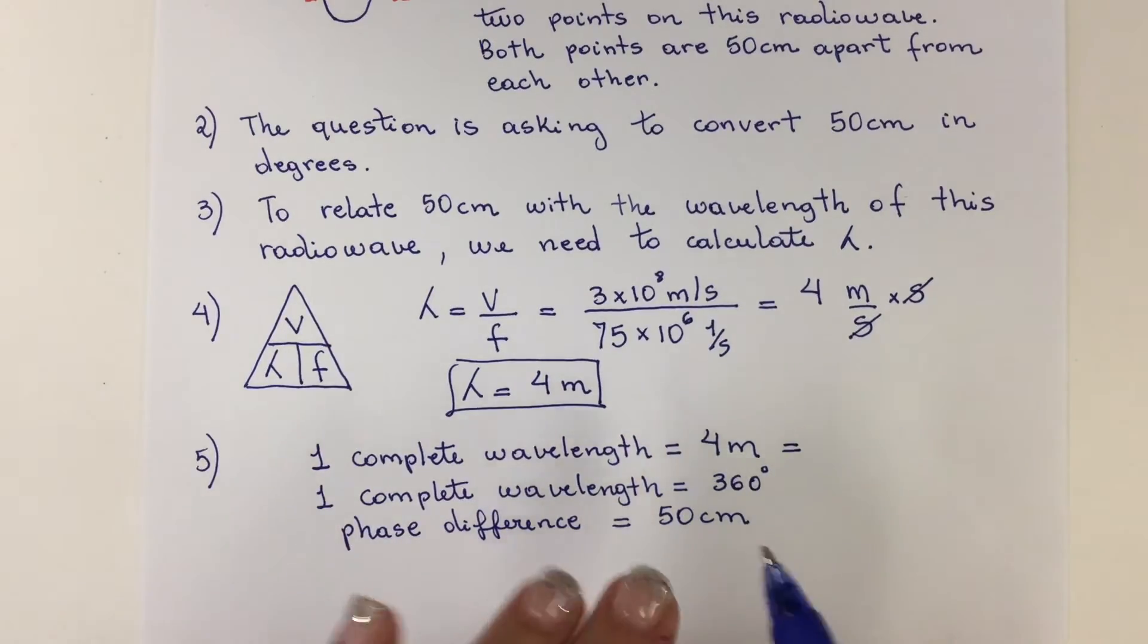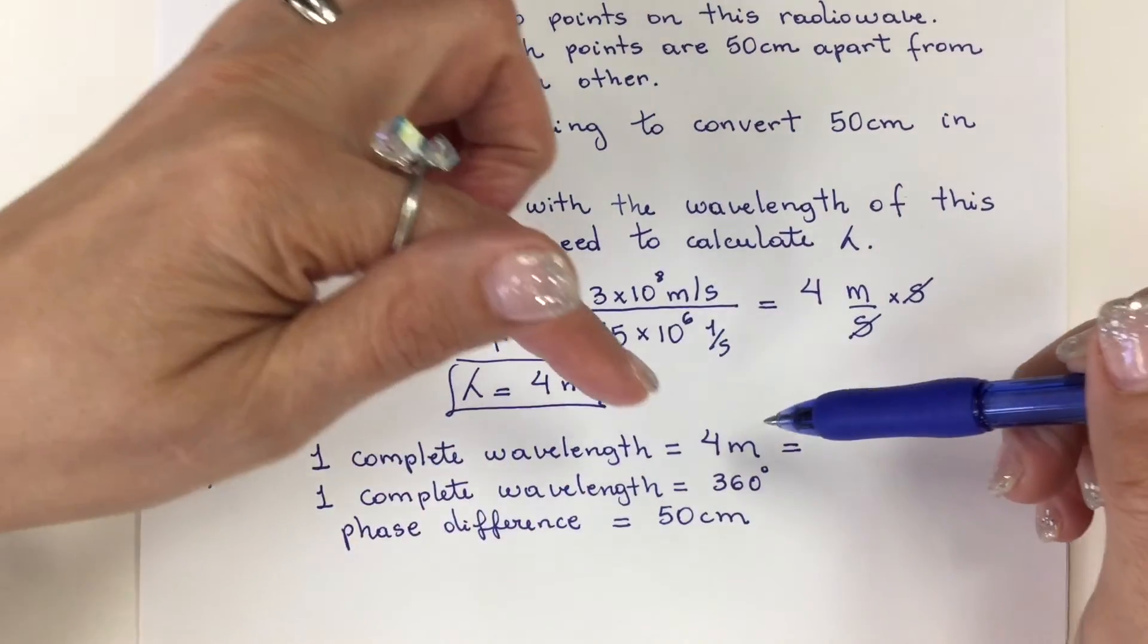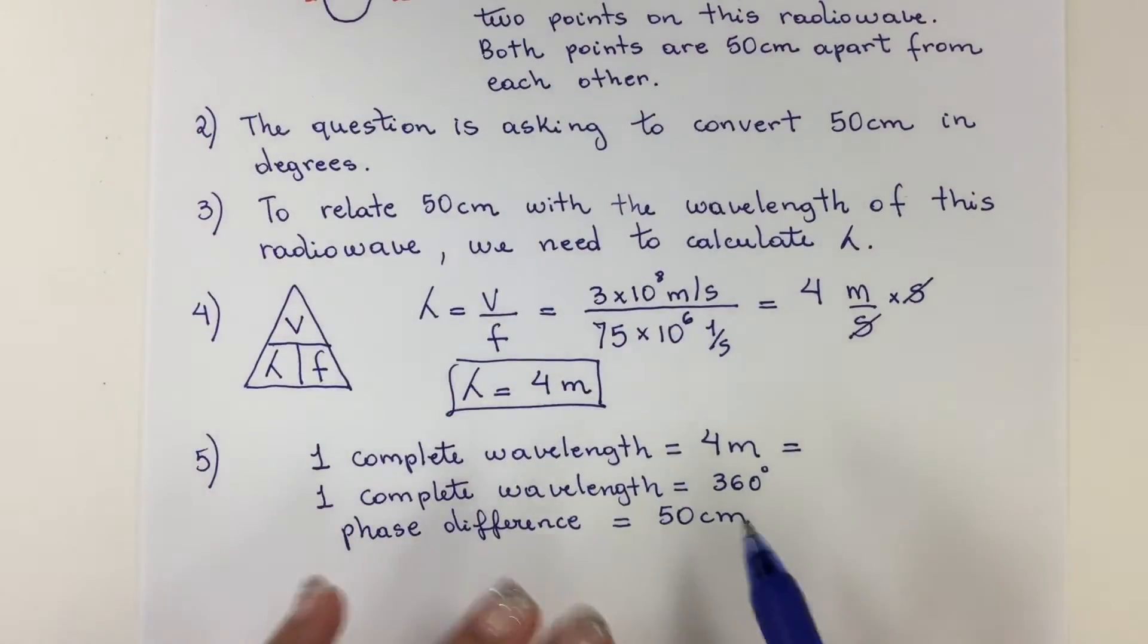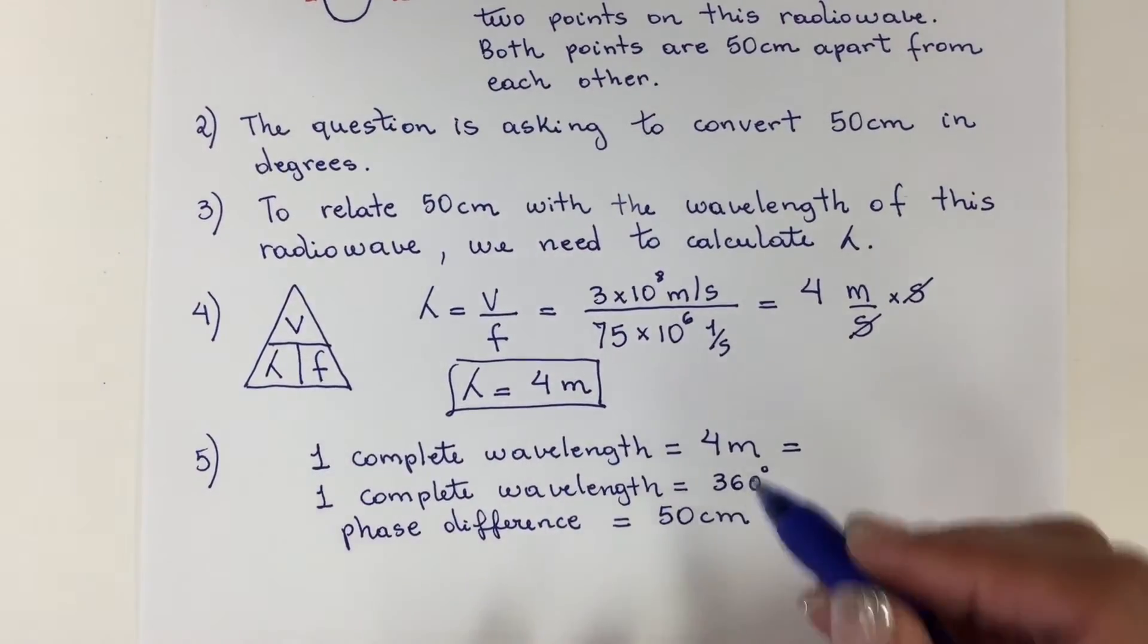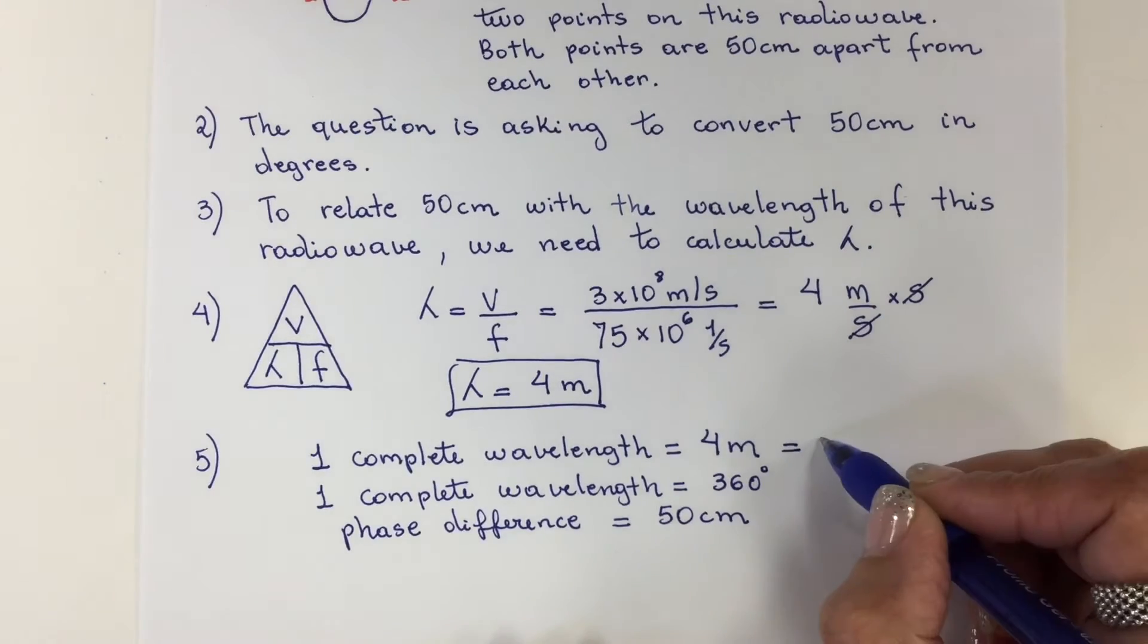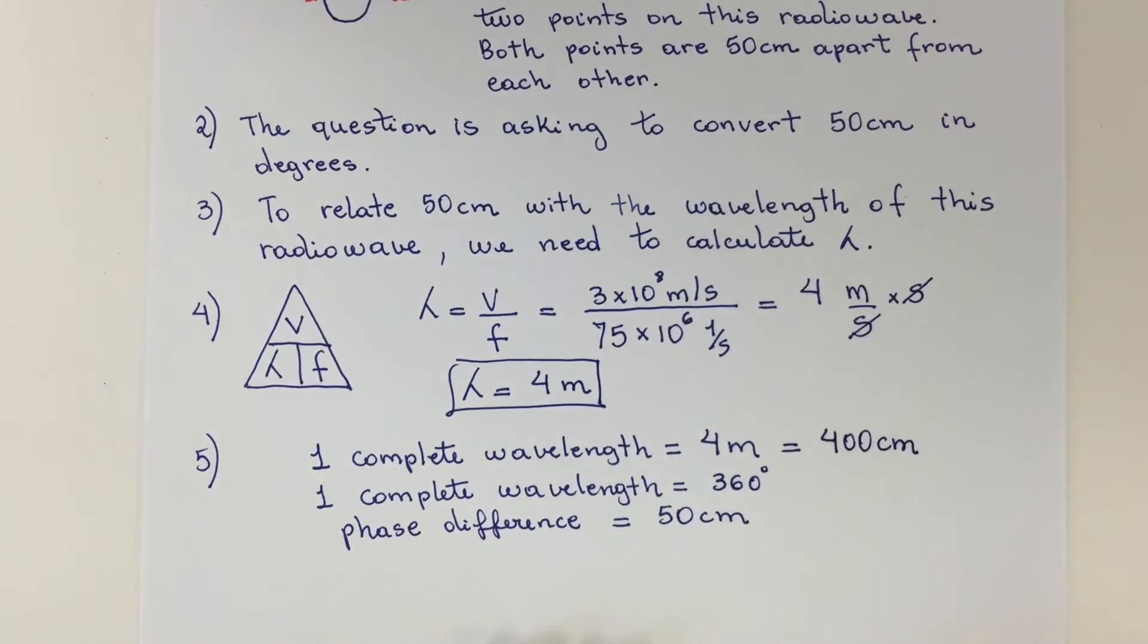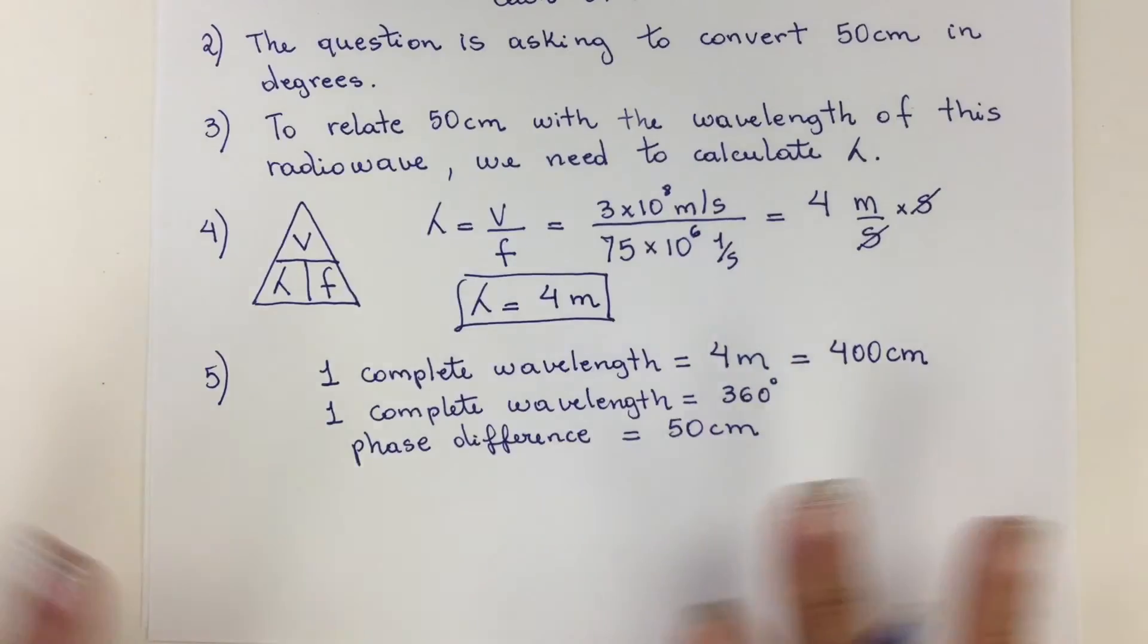Now the phase difference is 50 centimeters, and the wavelength is 4 meters. To compare apples with apples, we need to change this unit. I'm going to convert 4 meters to centimeters, so it'll be 400 centimeters. Now I'm going to establish the ratio.